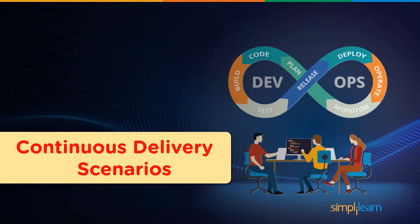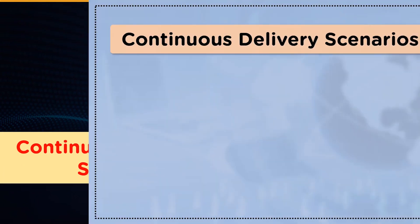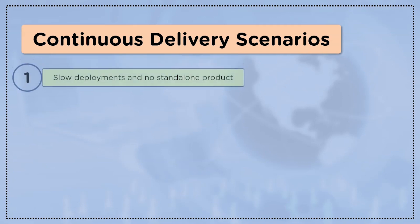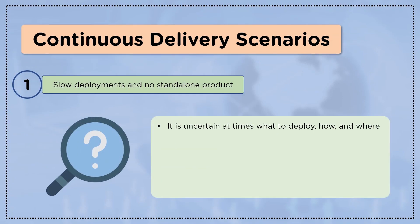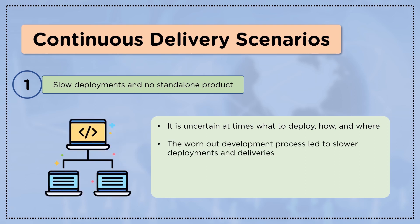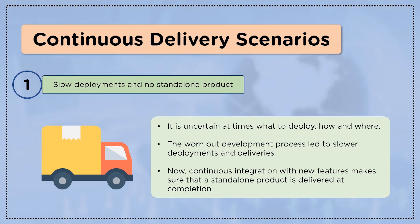Now let's look at our third subsection: continuous delivery scenarios. The first scenario is slow deployments and no standalone product. At times the complexity increases to such a level that uncertainty about what to deploy, where, and how becomes normal. The old development process was time-consuming, leading to slower deployment and delivery. But now, continuous development is backed up by continuous integration followed by continuous delivery.